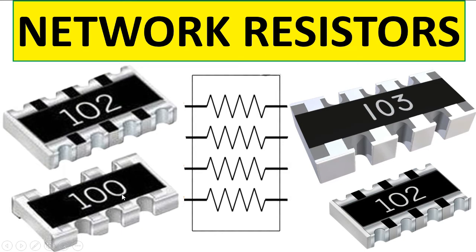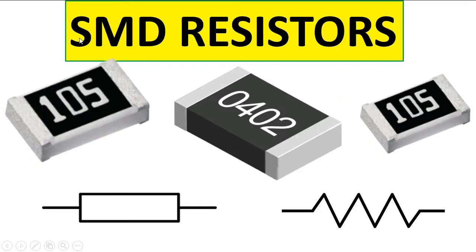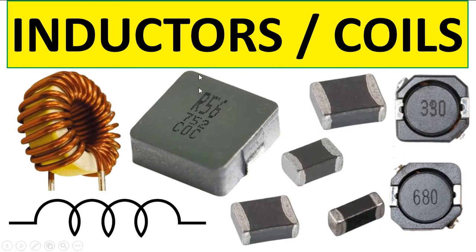These are SMT resistors. There are two symbols used: the universal symbol and the US symbol. The code on the resistor indicates its value — for example, a marking of 10 with five zeros uses the rule that the third digit is always the number of zeros to add.